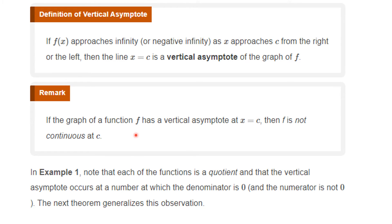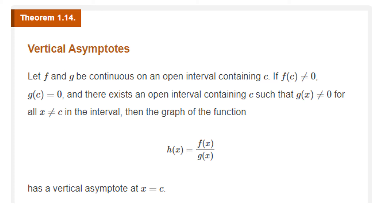If the graph of a function f has a vertical asymptote at x equals c, then f certainly can't be continuous at c. From previous examples, note that each function was a quotient, and the vertical asymptote occurred at a number where the denominator is zero and the numerator is not zero. As a theorem: let f and g be continuous on an open interval containing c. If f of c does not equal zero and g of c does equal zero, then there exists an open interval containing c such that g of x does not equal zero for all x not equal to c in the interval. Then the graph of h of x equal to f of x over g of x has a vertical asymptote at x equals c.